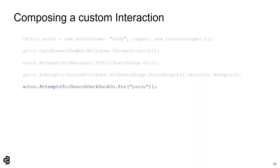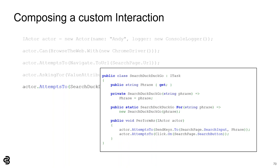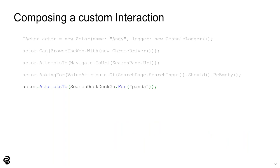The test case's next step is to enter a search phrase, requiring two interactions: typing the phrase into the search input and clicking the search button. However, since searching is such a common operation, we can create a custom interaction for search by composing the lower-level interactions together. The SearchDuckDuckGo task takes a search phrase. Its PerformAs method calls two other interactions — SendKeys and Click. Using one task to combine these lower-level interactions makes the test code more readable. Read this in plain English: the Actor attempts to search DuckDuckGo for 'panda' — concise and intuitive.